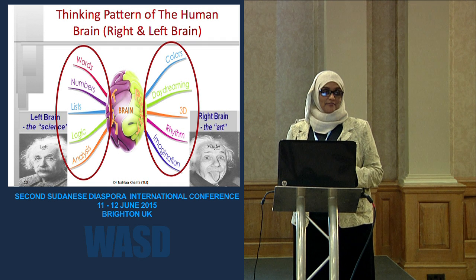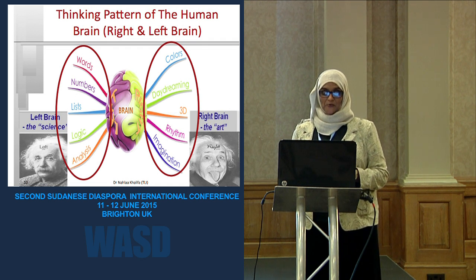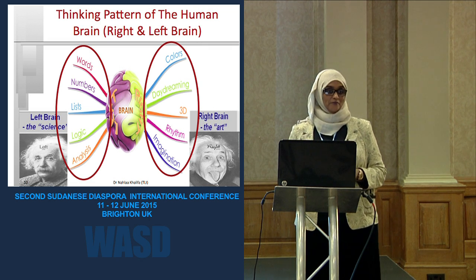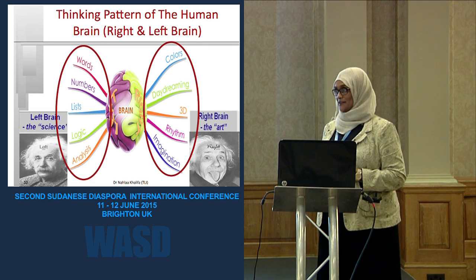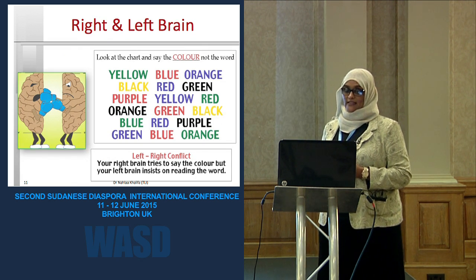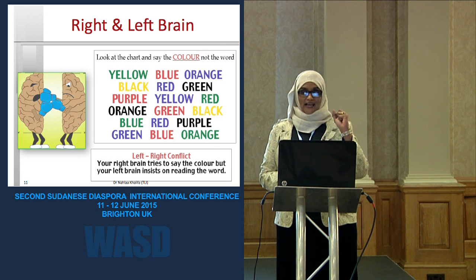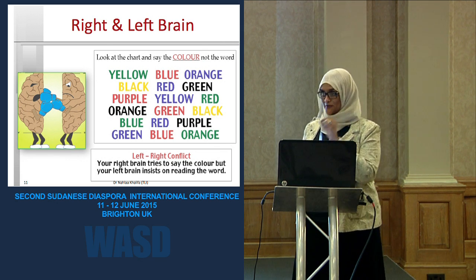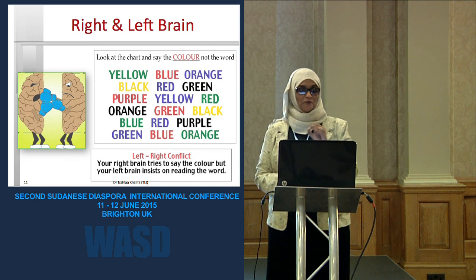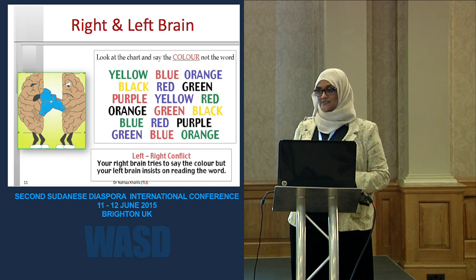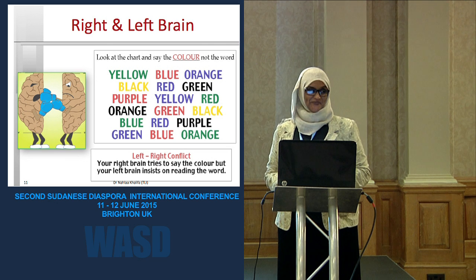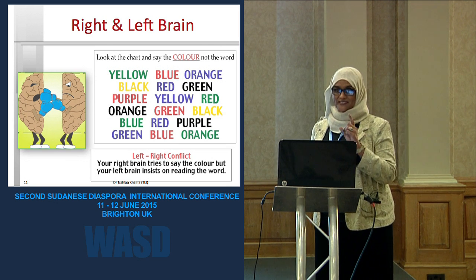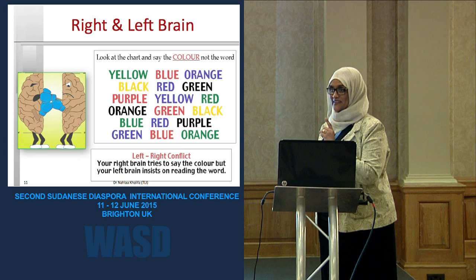We can find Albert Einstein here — he used the right brain for art and the left brain to support his science. Regarding right and left brain, I want one volunteer from the audience to read a slide for me.